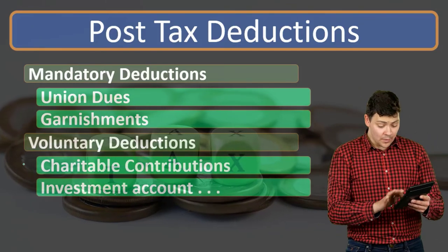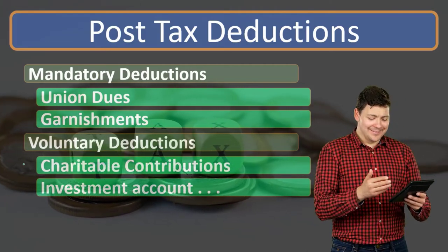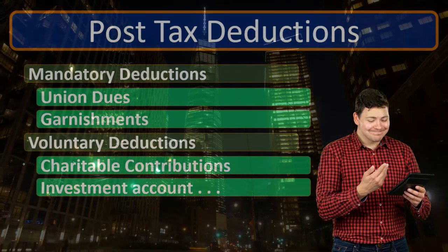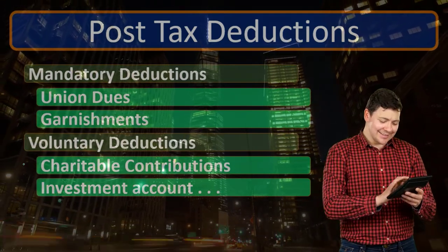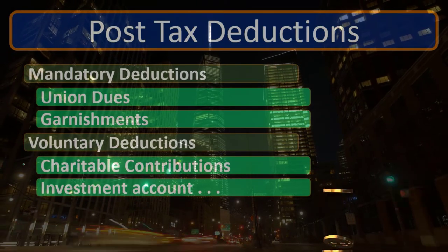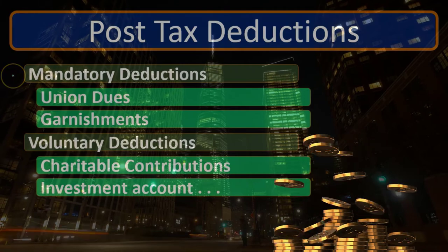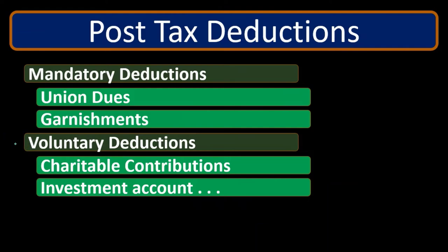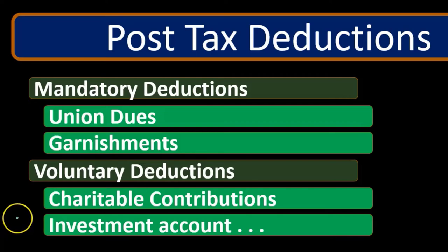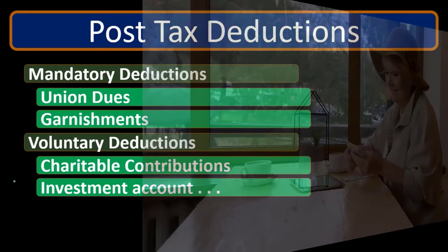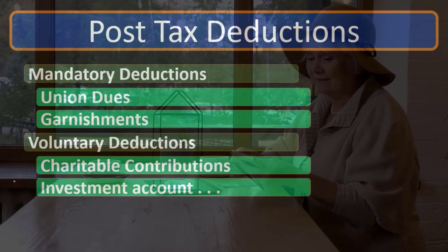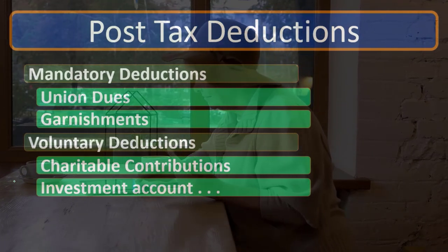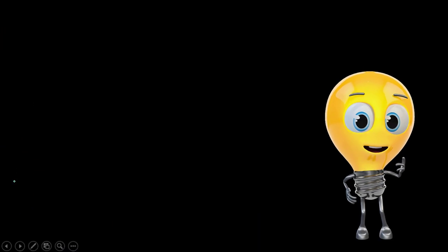It could also be an investment account — taking some money out and putting it into an investment every month. The company is taking money from the employee's check before giving it to them, and instead paying it to the parties the employee wants to pay. These voluntary deductions are a favor the company is doing — putting money into a charitable account or investment as requested. Any type of expense arrangement, like a gym payment or a monthly automatic payment, could be paid out given the arrangement between the employer and the employee.